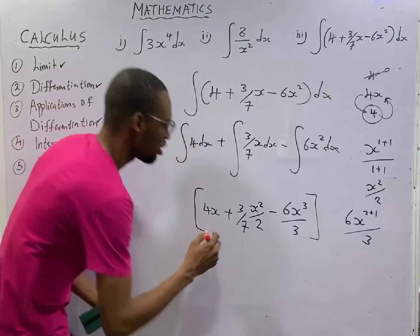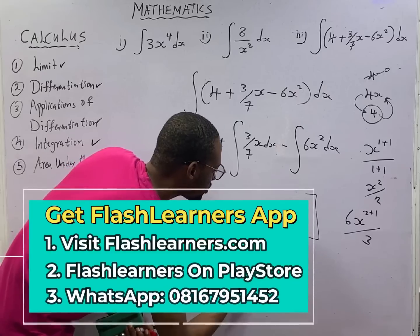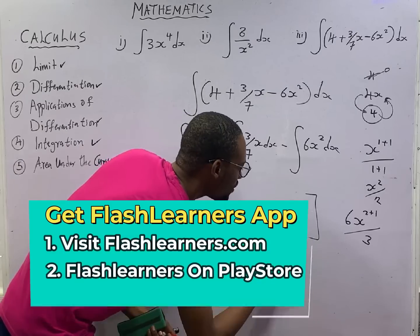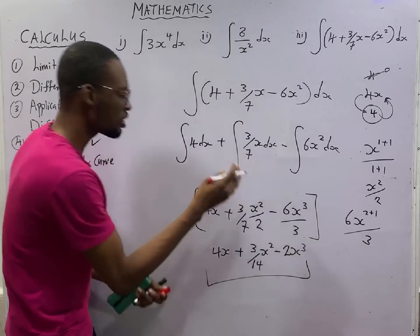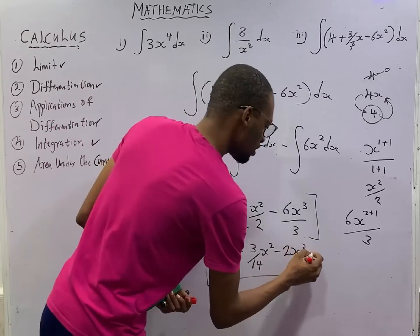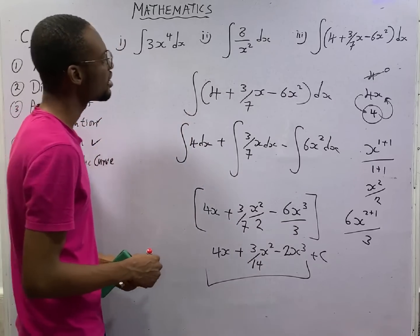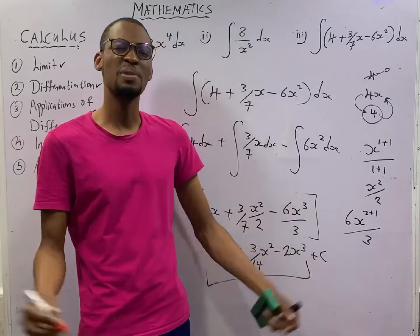Let us simplify this expression to have 4s plus 3 over 14s squared minus 6 divided by 3 is 2, 2s to the power of 3 plus c, because it is an indefinite integral.